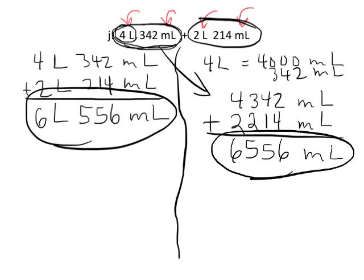And I know these answers look different, except if we wanted to, this right one, we could take 6,000 milliliters and turn it into 6 liters, and then we have 556 milliliters left over. So we've got a variety of ways that we could have solved this problem.